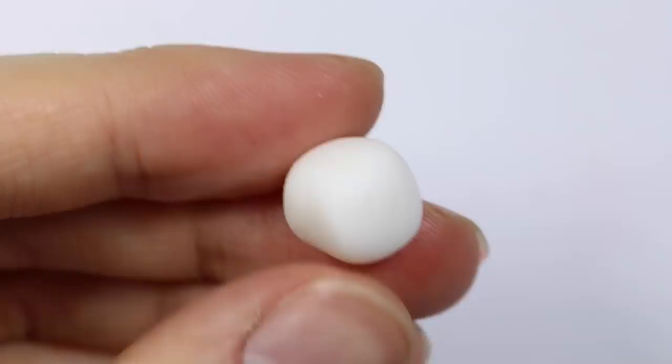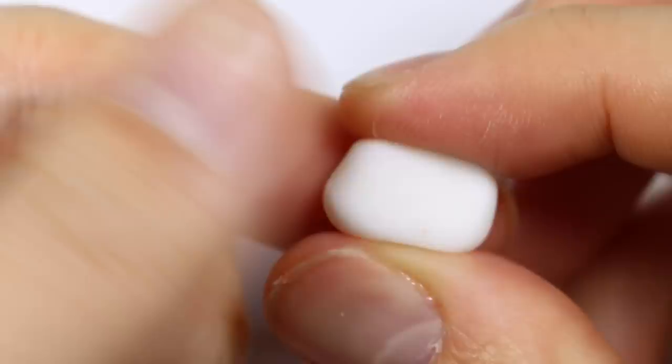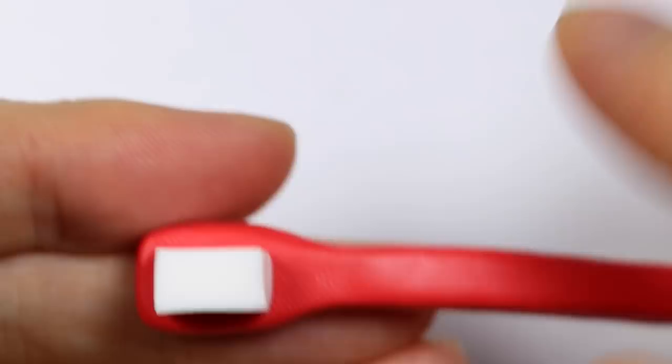So for the brush, I'm taking some Fimo White Translucent and I'm pinching it into a rectangular shape. And then I'm going to place it onto the rectangular part of my toothbrush handle.